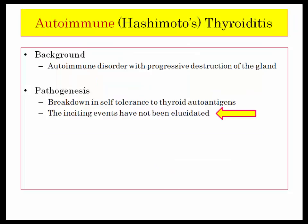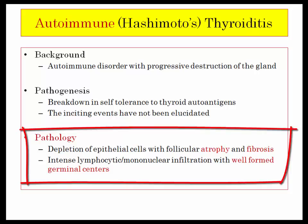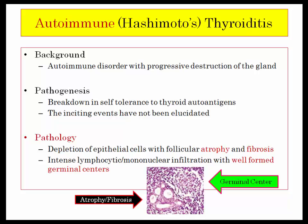Let's turn our attention to autoimmune thyroiditis. This is an autoimmune disorder with progressive destruction of the gland. Since the gland is destroyed, we won't see the trophic changes one would expect with a high TSH. The pathogenesis relates to breakdown in self-tolerance to thyroid autoantigen. The pathologic description: a typical question will give signs and symptoms of hypothyroidism, possibly with autoantibodies, then ask for the pathologic description. It is follicular atrophy and fibrosis, but the intense mononuclear infiltrate and well-formed germinal centers are very specific for Hashimoto's.